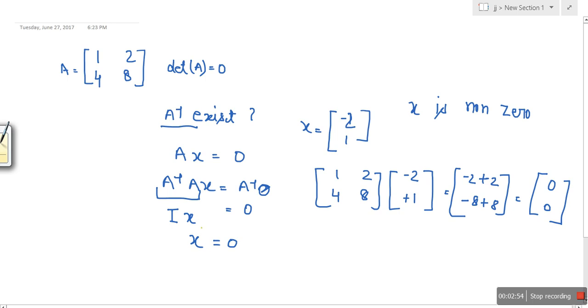So we assumed that A inverse exists, and what we have concluded is that X equals 0. But as you can see here, X is not 0. So whatever we have assumed is not true. That's why A inverse for a singular matrix doesn't exist.